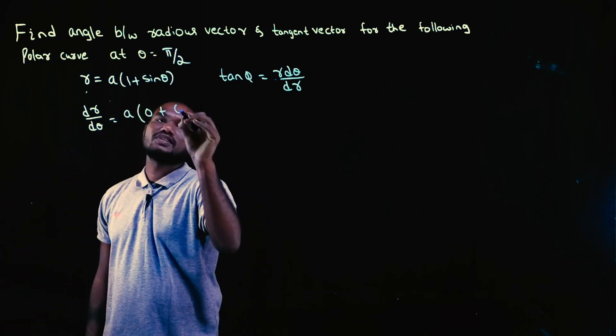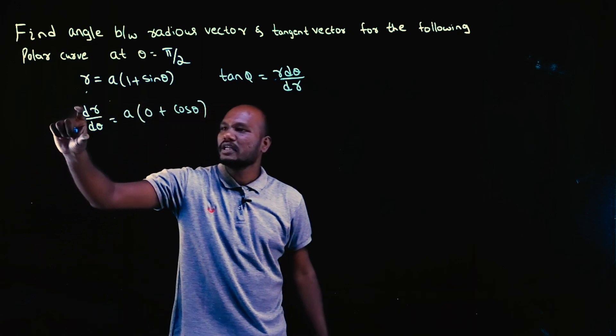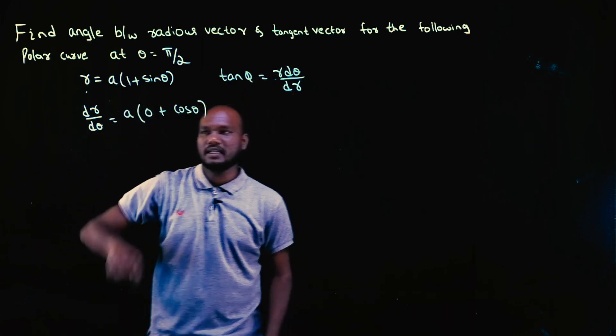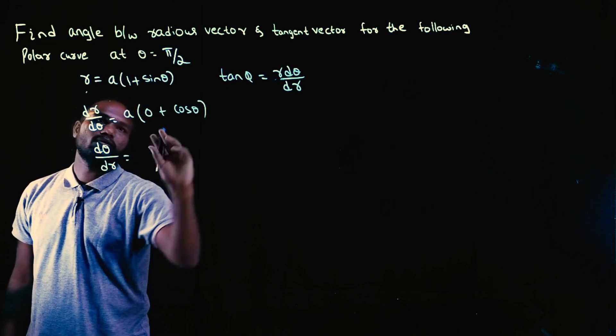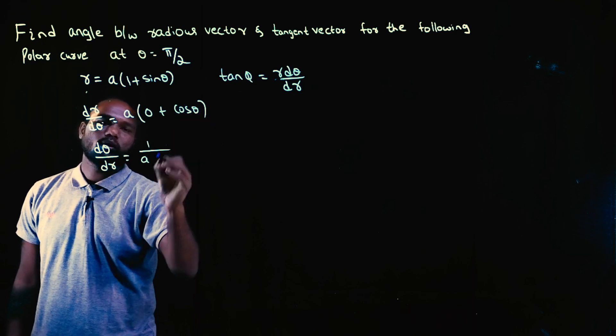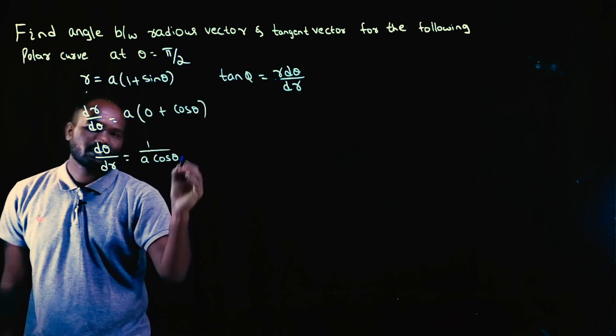Plus sine theta differentiation is cos theta, pretty simple. But I'm not interested in dr by dθ, I'm interested in dθ by dr. So just reverse this. dθ by dr equals, by reversing this, a becomes 1/a, cos theta becomes 1/cos theta.